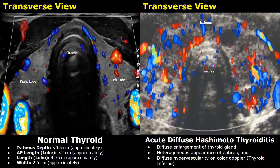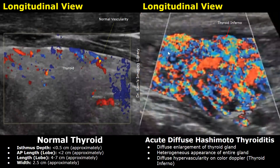This increased vascularity is called 'thyroid inferno' — many Doppler signals are seen and the thyroid appears enlarged and heterogeneous. Comparing a normal color Doppler image in the longitudinal plane, which shows only a few Doppler signals, with a case of Hashimoto thyroiditis where thyroid inferno is noted, we see many color Doppler signals within the thyroid indicating increased vascularity.